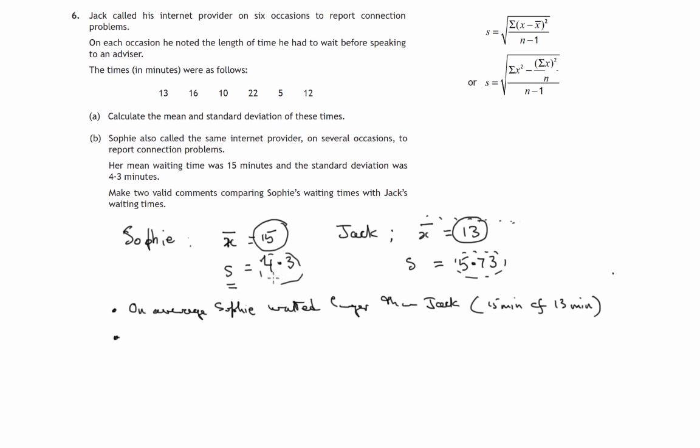The second thing is that around about that average, the waiting times that Sophie was subject to were less spread out - they were clustered around that 15 more so than Jack's waiting times. His were spread out more. So we'll say that Jack's waiting times were more spread out around the mean than Sophie's waiting times.